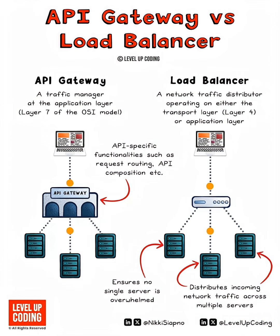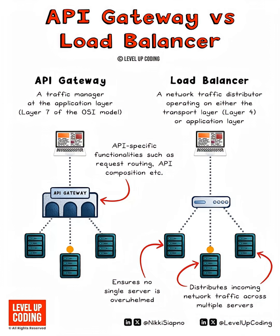Its purpose is to manage API traffic intelligently. It routes requests to appropriate services, composes multiple API calls into one, and applies policies like rate limiting and authentication. The goal is to prevent any single server from being overwhelmed by managing how APIs are accessed and used. It is best suited for microservices architectures where APIs need centralized management.